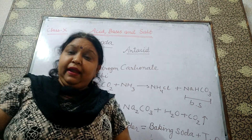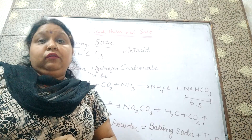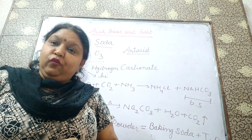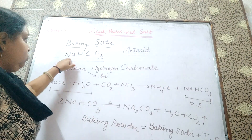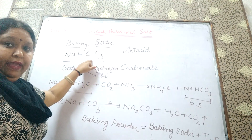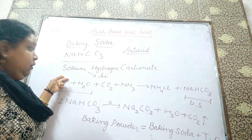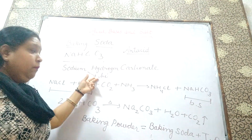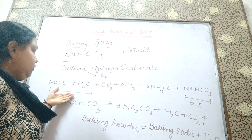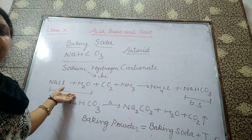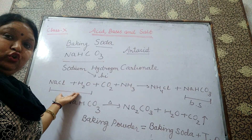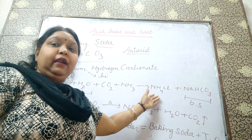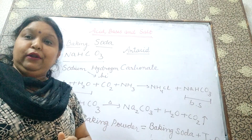Hello students, welcome back. We were doing baking soda and I have explained you that what is the formula for baking soda — that is sodium hydrogen carbonate. And what is the name given to it? Sodium hydrogen carbonate can be called as sodium bicarbonate. And I have explained you how you can prepare sodium hydrogen carbonate: if I take any brine solution along with CO2 and ammonia, then I am going to get ammonium chloride along with sodium hydrogen carbonate.